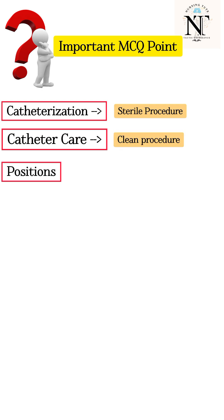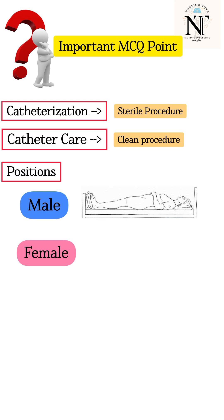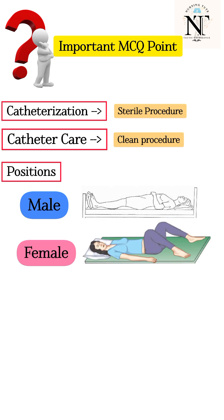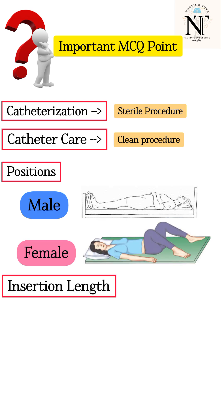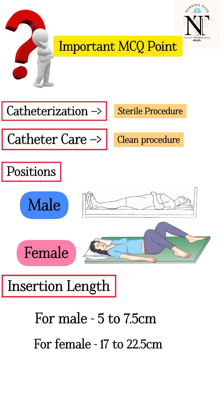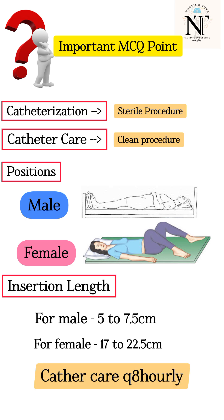Regarding position while inserting a urinary catheter: for males, the position is supine; for females, it is dorsal recumbent. The insertion length for males is 5 to 7.5 cm, and for females it is 17 to 22.5 cm. Catheter care should be provided every 8 hours.